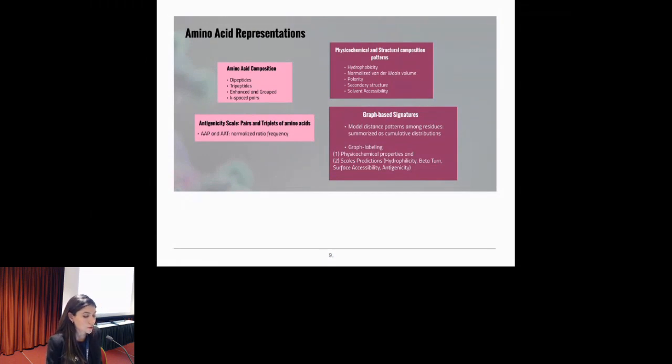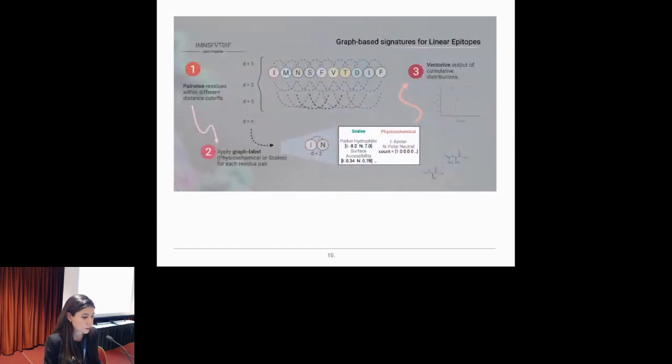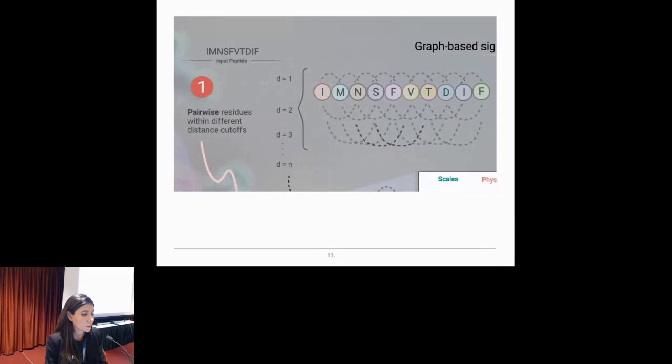But the novelty here is the use of mathematical modeling called graph-based signatures, which measure distance pattern among the residues for each input and summarize it as a cumulative distribution vector. This illustration here will, I hope, take this modeling more clear. It basically divided in three main steps. So first, if you take a look, given a protein, a peptide sequence, it will pair-wise all possible residues within it, starting with distance one, which means that residues that are side-by-side in a sliding window. So we will check all pairs within the sequence. Then we'll step-by-step increase this distance to a maximum distance between all the residues, all the possible pairs of residues of this sequence.